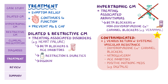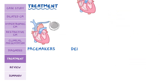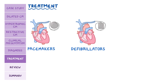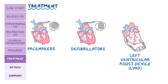Additionally, in all cardiomyopathies, those prone to fatal arrhythmias need implanted pacemakers or defibrillators. Some individuals need a left ventricular assist device, or LVAD, which is a mechanical pump that assists the heart in distributing blood. In extreme cases, a heart transplant may be necessary.